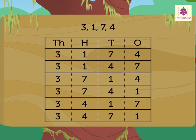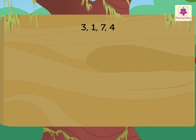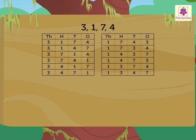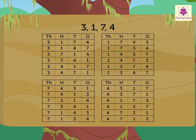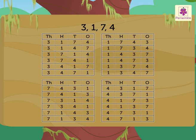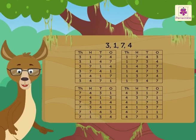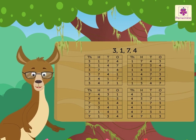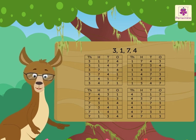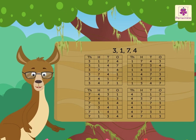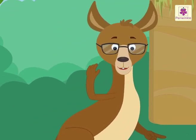Now, we repeat the process by writing another digit in the thousands place and then changing the positions of the remaining three digits in the hundreds, tens and ones place. These are all the numbers which can be made using the digits 3, 1, 7 and 4. Wow! So many numbers can be formed using just four digits. Kids, now you try forming numbers with any four digits of your choice. Hope you had fun learning with Caddy.